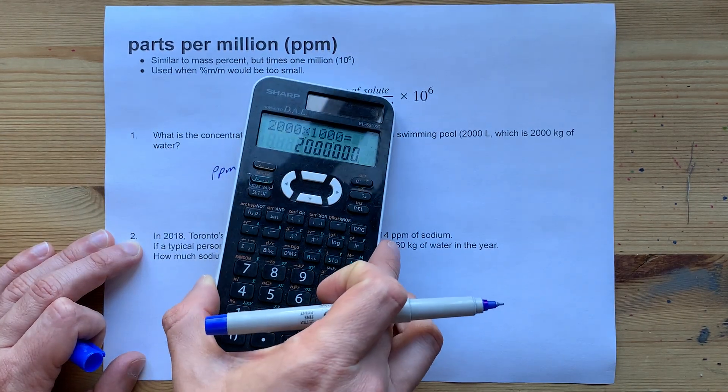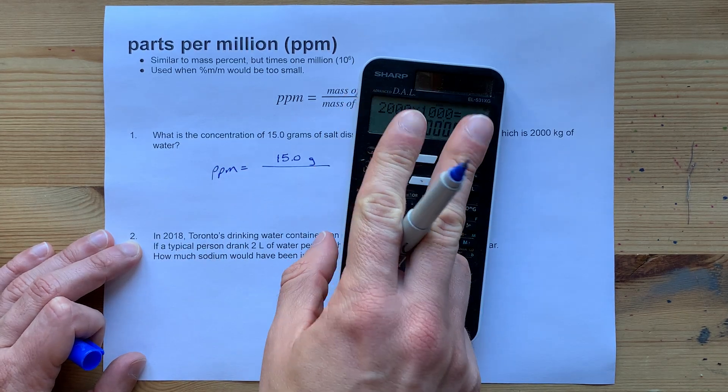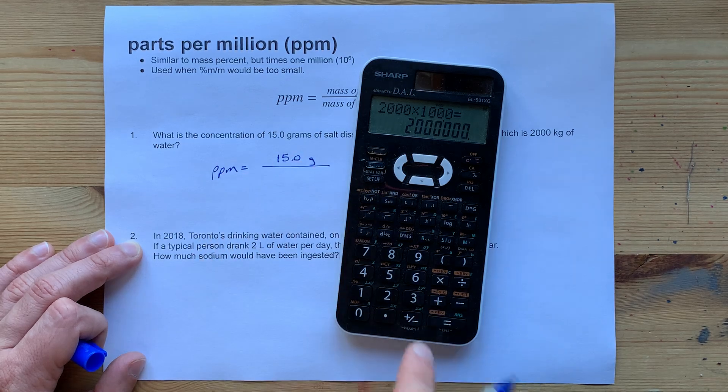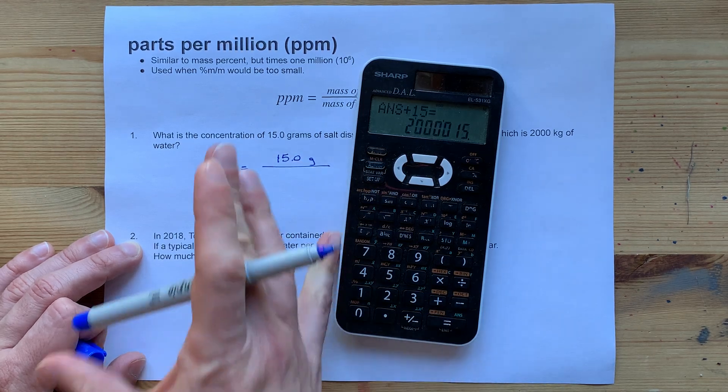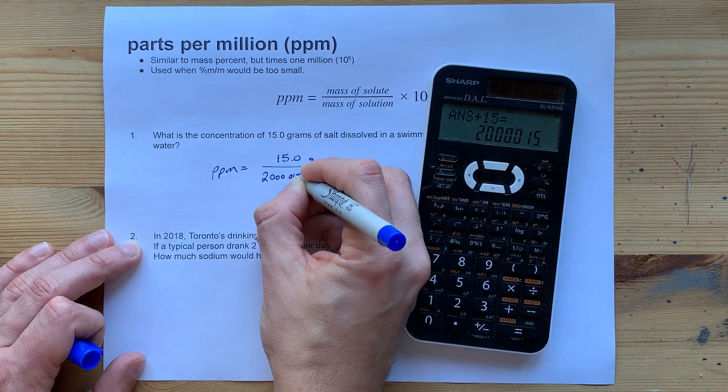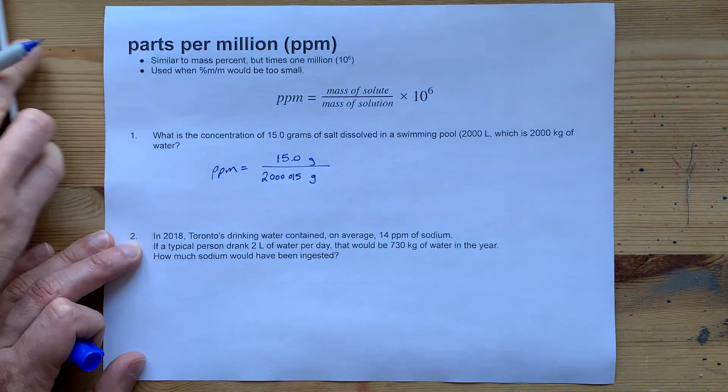That's 2 million grams. And because solution is the combination of the solvent and solute, I should add 15 to that. So I technically have 2,000,000 and 15 grams of solution. It's the combination of the two.